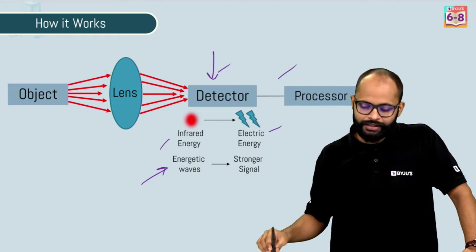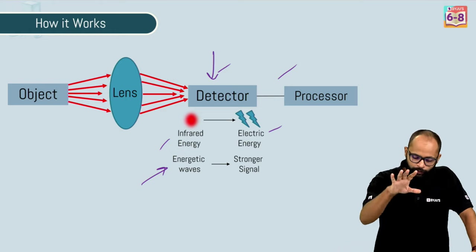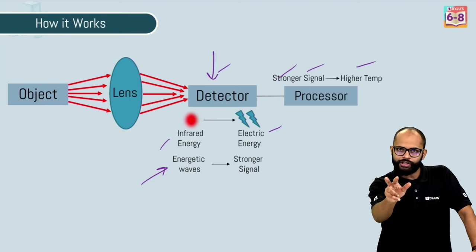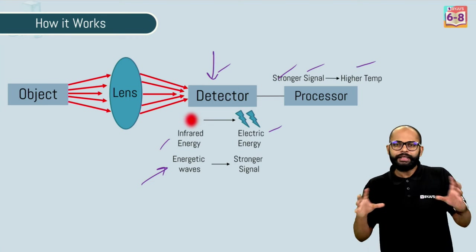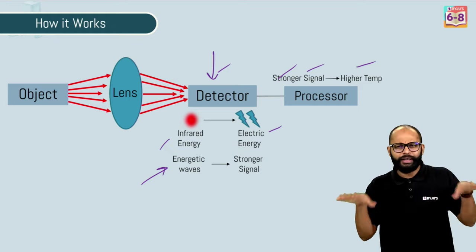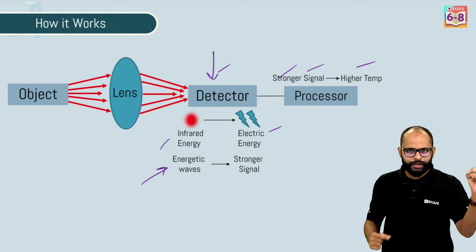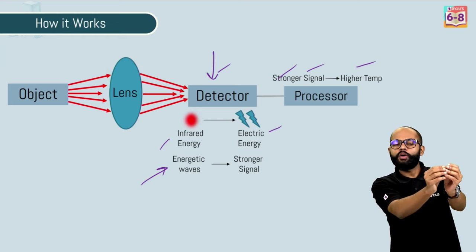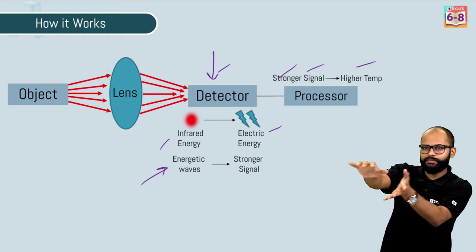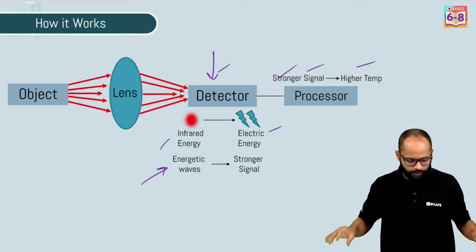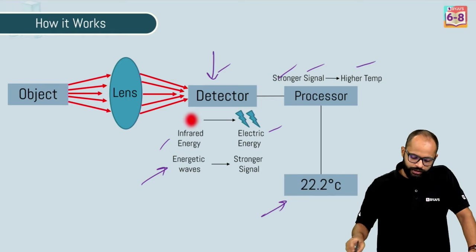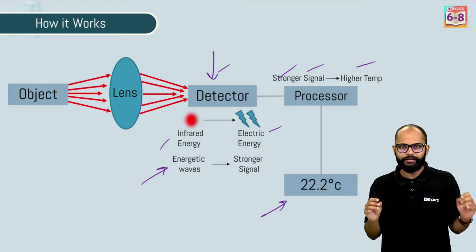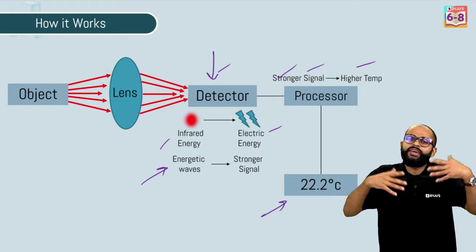Now, these signals are sent to a processor. The job of processor is to convert these signals and tell you how much temperature is it. It's like a coding kind of thing. Whatever signals are coming, the job of processor is to manipulate or just see, this electrical signal means this much is the temperature. This is what happens in the processor. After this, the processor displays this on the display. That is the display we are seeing. 22.2 degrees Celsius, 35 degrees Celsius, 37, 40, 100.